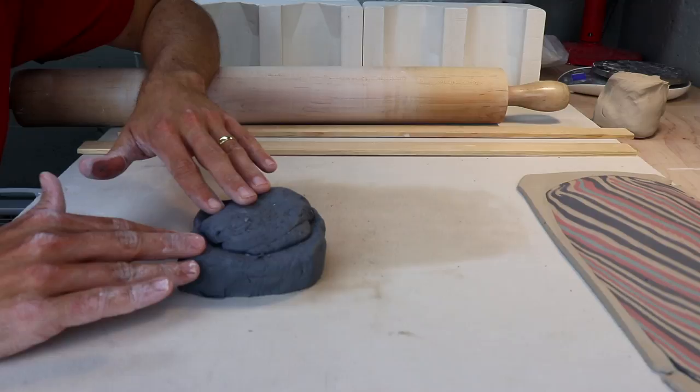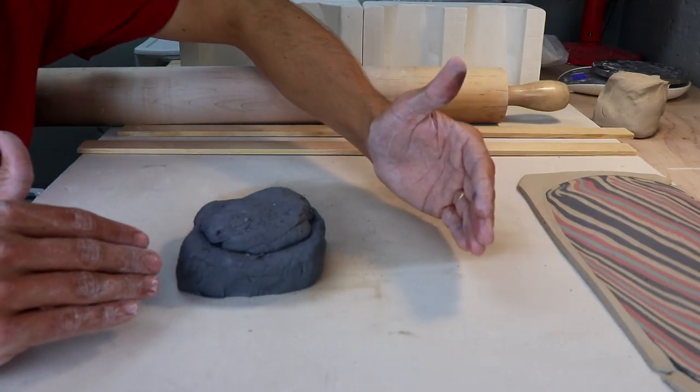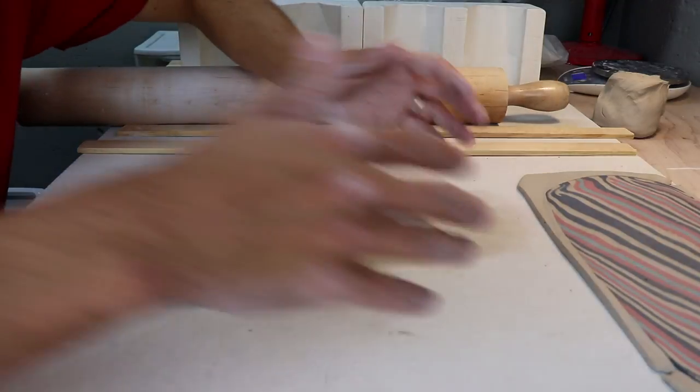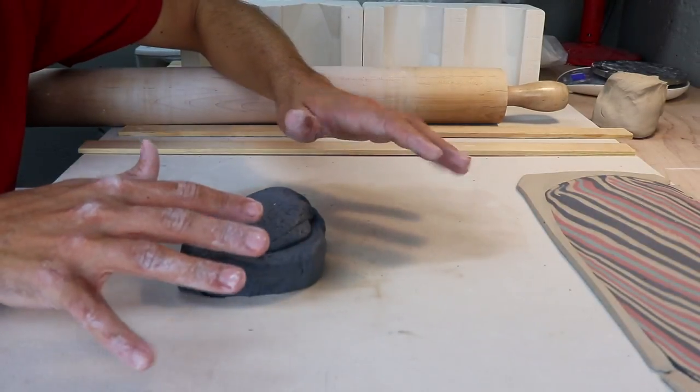I'll do the same thing as before. I'll roll out a slab of black clay, I'll add it on top of a white slab of clay, stretch it out, and then we'll move on. Let's skip ahead.